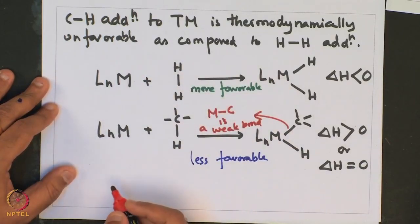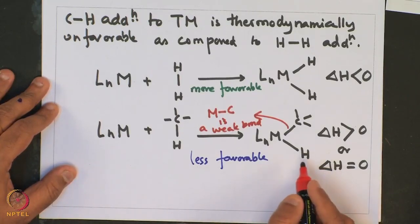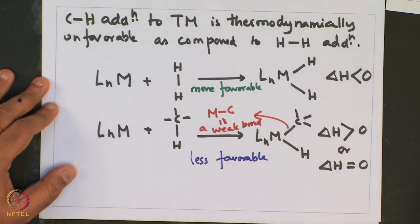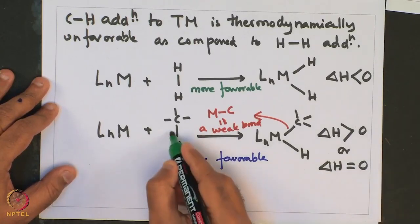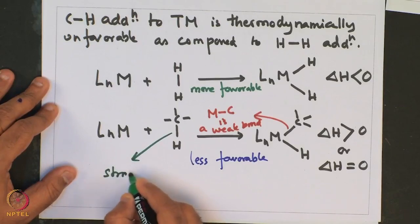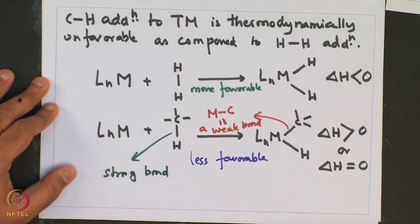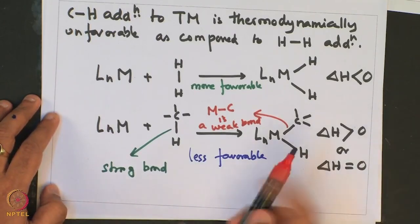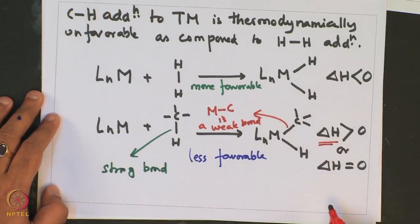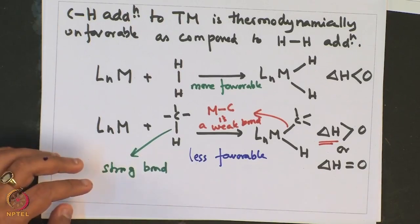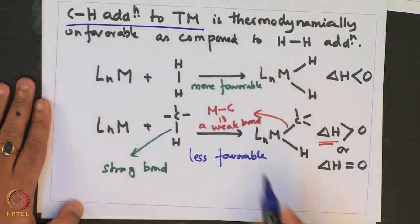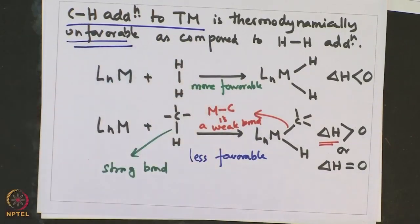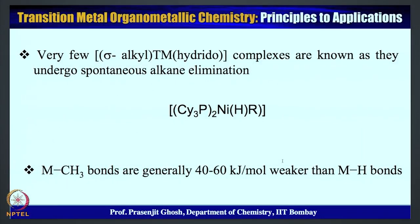The metal-carbon bond is a weak bond that cannot compensate for the strong bond that is broken when a C–H bond is cleaved. This C–H bond, which is very strong, is broken, and a weak M–C bond is formed. As a result, the ΔH is usually positive or at best thermodynamically neutral, indicating that C–H oxidative addition to a transition metal is thermodynamically unfavorable.